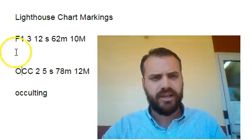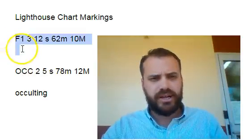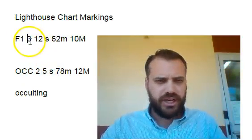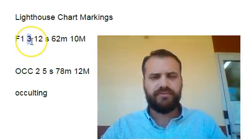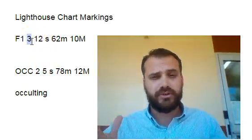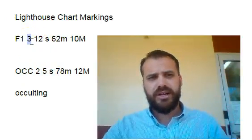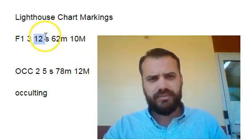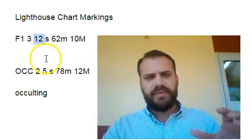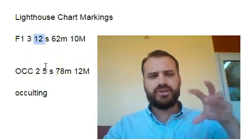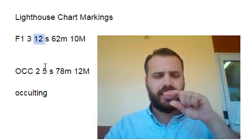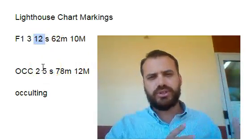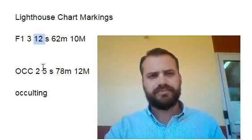This number can change — so it could be 4 flashes, 5 flashes, or 2 flashes — and the time can change too. The idea is that lighthouses along the coast all have individual flash patterns, so you know which lighthouse it is.